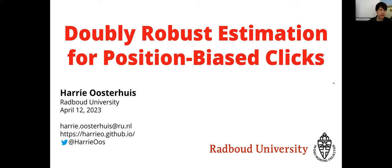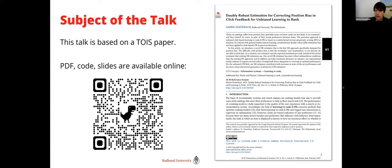My name is Harry Osterhuis. I'm an assistant professor at the Radboud University in the Netherlands. Today I'm going to talk about counterfactual estimation, specifically for learning from user interactions with rankings. This talk is based on a recent paper published in TOIS, Transactions on Information Systems. It's open access, so you can find it on my website, along with the code. Hopefully by the end you'll be interested in reading it.